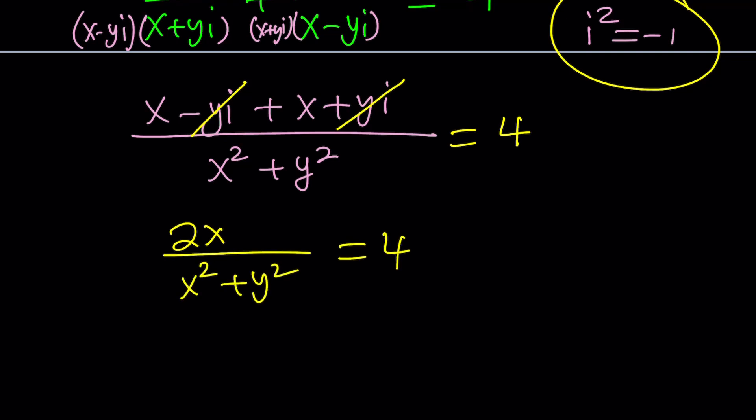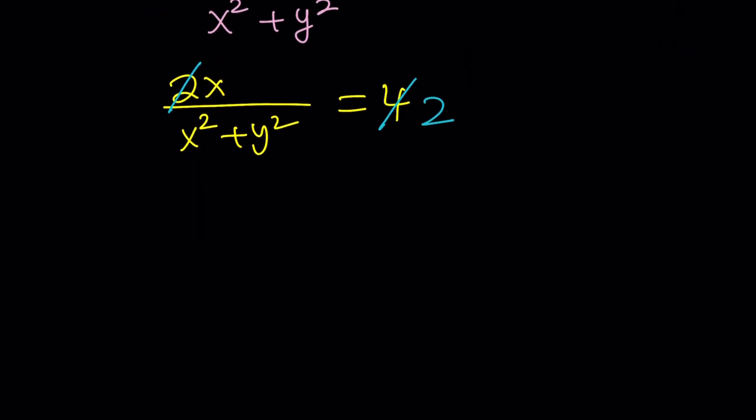Now you can do however you want, but I like cross cancelling. 2 goes into 4 twice. And this gives us after cross multiplication, x equals 2x squared plus 2y squared. But let me go ahead and write the quadratic terms first, because they are of a higher power, right? Literally. So 2x squared plus 2y squared is equal to x.